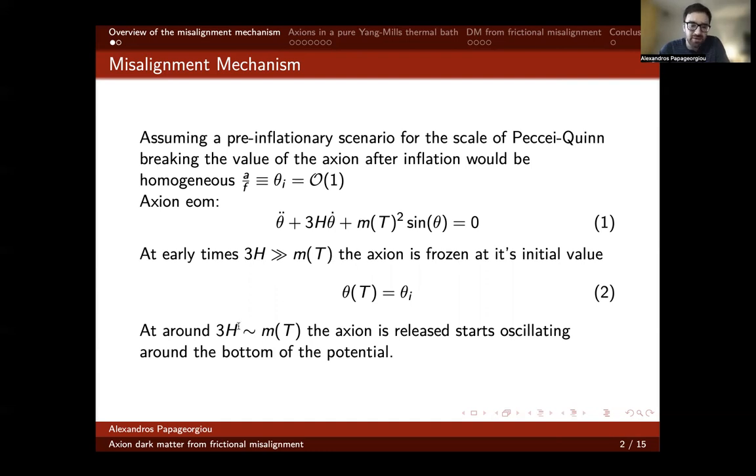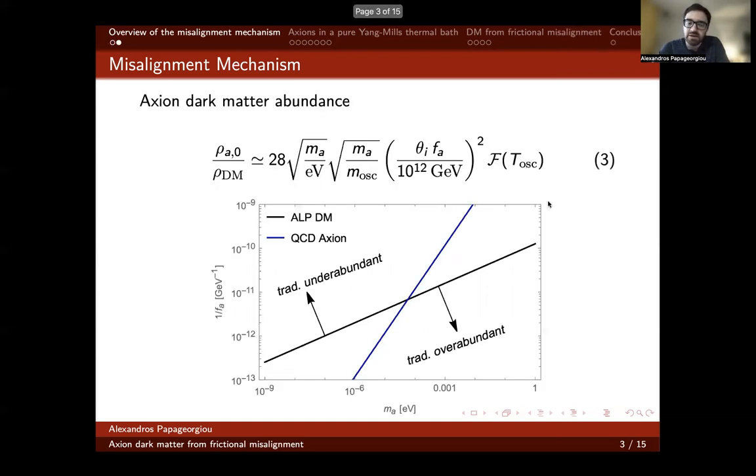At later times, when the Hubble friction becomes approximately equal to the mass, the axion is released and starts oscillating around the bottom of the potential. From that point on, it behaves approximately as dark matter. So what I just described qualitatively, you can compute exactly. The result of this computation is formula three, which yields the dark matter abundance as it would be observed today.